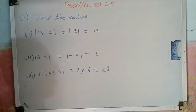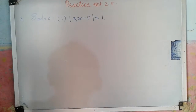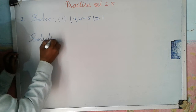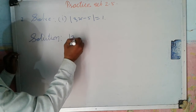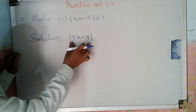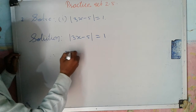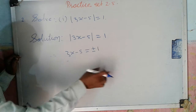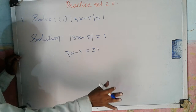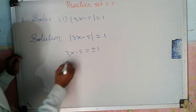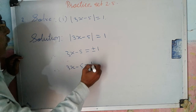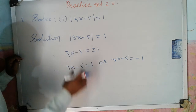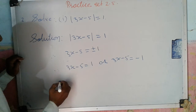Now we will solve question number 2, Example 1. Given: Modulus of 3x minus 5 is equal to 1. That means 3x minus 5 is equal to plus or minus 1 — this value may be positive or may be negative. Therefore, either 3x minus 5 equals 1, or 3x minus 5 equals minus 1. So we have two equations — first taking positive 1, second taking negative 1.